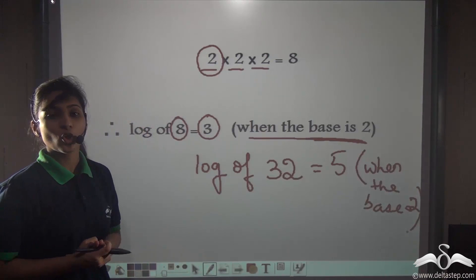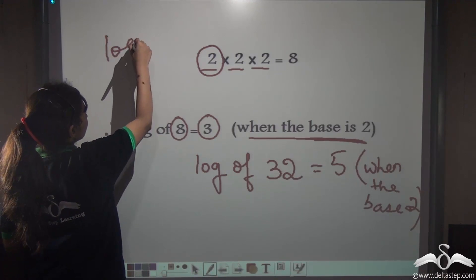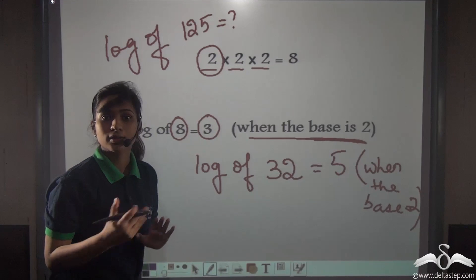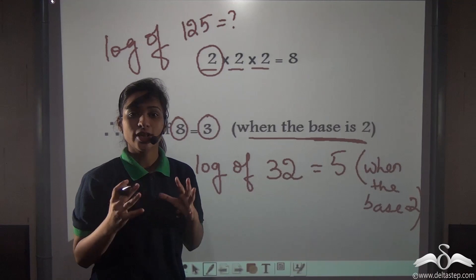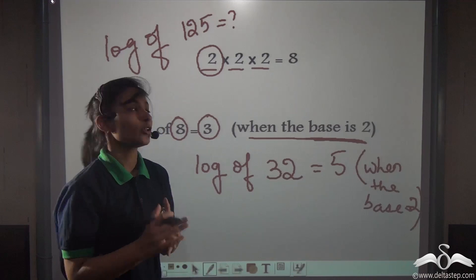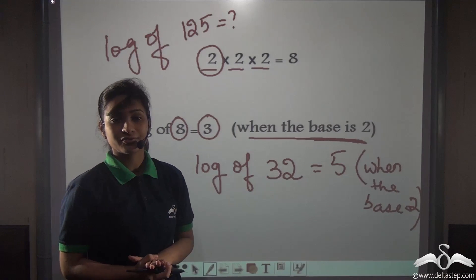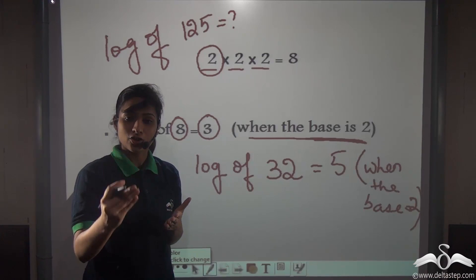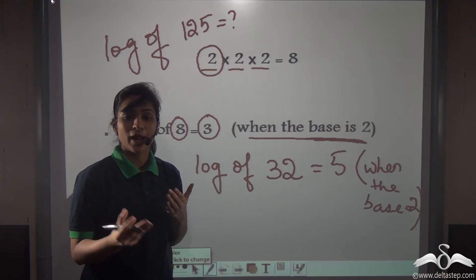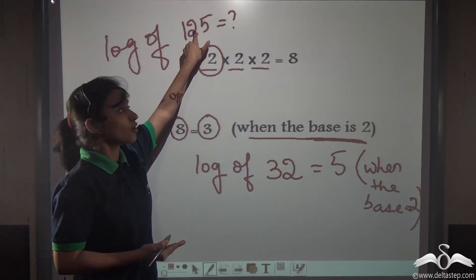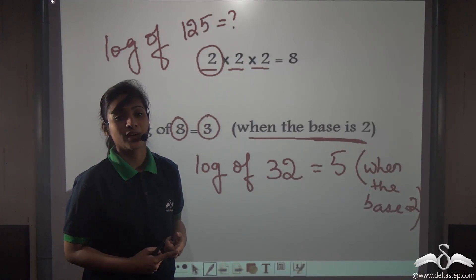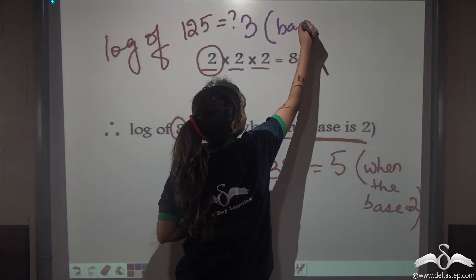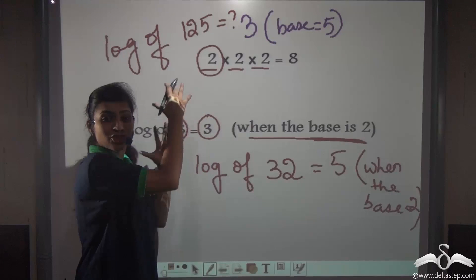Do you get it? Now if I ask you what is the log of say 125, can you tell me that? I need to tell you the base — the base is say 5. Now tell me what is the log of 125 if the base is 5? If the base is 5, then you know that 5 into 5 into 5 is 125. So 5 multiplied with itself 3 times gives you 125. What will be the log of 125? It will be 3 when the base is 5. Now you will get what is actually log.